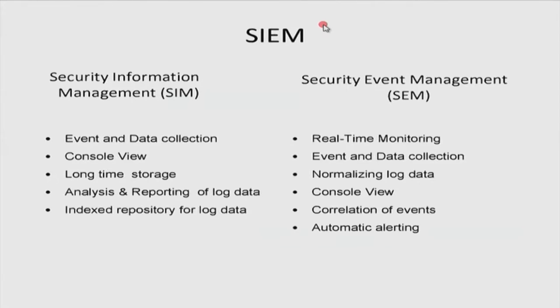If someone unauthorized logs into your system you can write an automated response so that it will close that port for some time or block that particular IP. Based on the logs, these logs can be normalized — critical logs versus normal logs. For example, normal user login is a usual thing that happens every day, but if someone tries to log into your server remotely from another IP, that is a critical one because there is a possibility of an attack. That kind of normalization can be done with Security Event Management. There is also a console view — the dashboard — which gives a complete view of what is happening, what alerts have been created, and the critical things. Automatic alerting can also be done.